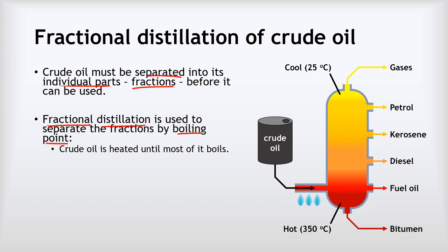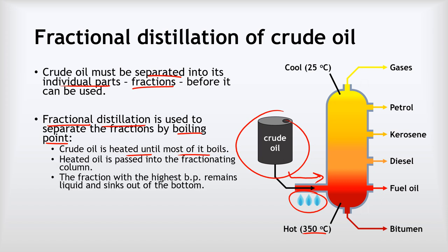The first thing we do is take our crude oil and heat it until most of it boils. You can see our crude oil here — it passes into the fractionating column through a pipe that gets heated until the crude oil is about 350 degrees Celsius. Nearly all of the different fractions will boil at those high temperatures. As it enters the fractionating column, the fraction with the highest boiling point actually remains liquid and sinks out of the bottom — and that fraction is called bitumen.